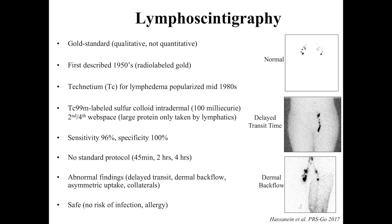Delayed transit is illustrated here: the patient's feet are at the bottom, these are the inguinal lymph nodes, and you can see uptake. Here's a patient with delayed transit — the left inguinal lymph nodes show uptake but nothing is taken up by the right inguinal lymph nodes, which is abnormal. Another major finding is dermal backflow, where you get an accumulation of tracer in the dermal lymphatics. Other soft signs of abnormality include asymmetric transit and collateral vessels.